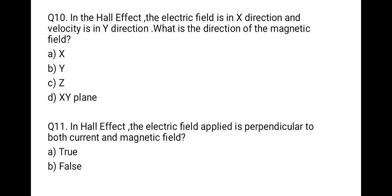Question 10: In the Hall effect, the electric field is in the x direction and velocity is in the y direction — what is the direction of the magnetic field? It is in the z direction. Hall effect is used for determining whether the semiconductor material is P or N type. With electric field in x direction and velocity in y direction, the magnetic field is in the z direction. Correct answer is z.